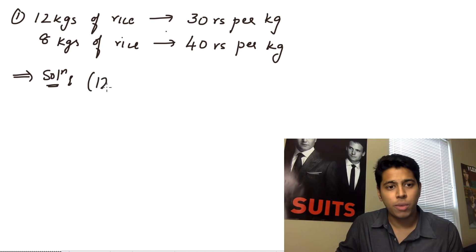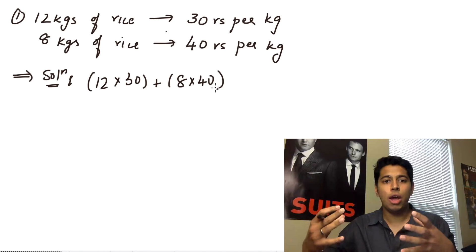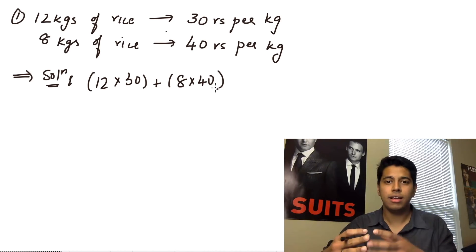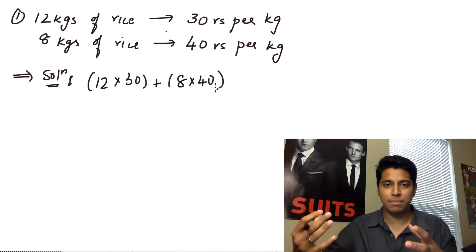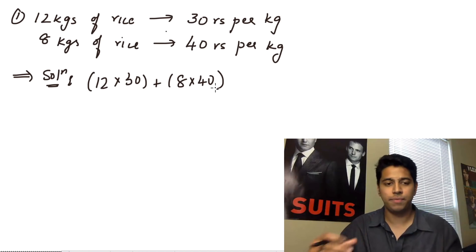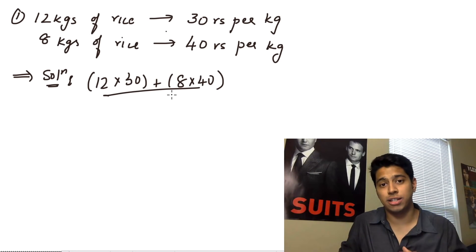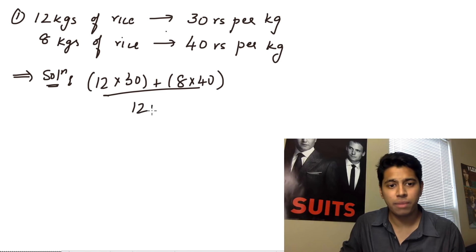You're going to have 12 into 30, plus 8 into 40. This is basically that you're mixing all your rice together. So similarly, now you have two different types of rice. You want to mix them up together, and then you'll find out what is the average cost. So you've got 12 into 30 plus 8 into 40, divided by the total number of kgs. So you've got 12 plus 8.